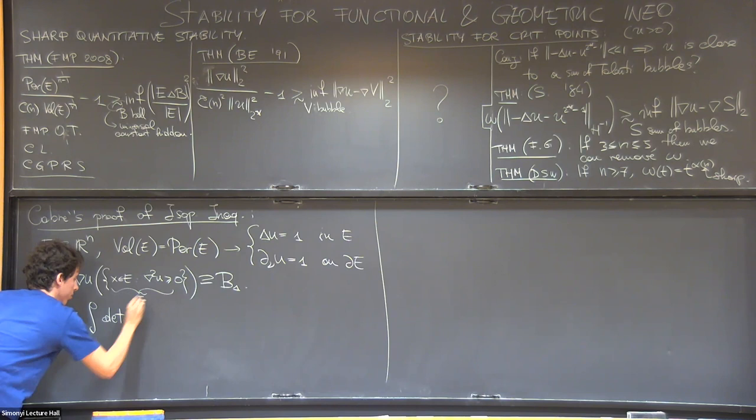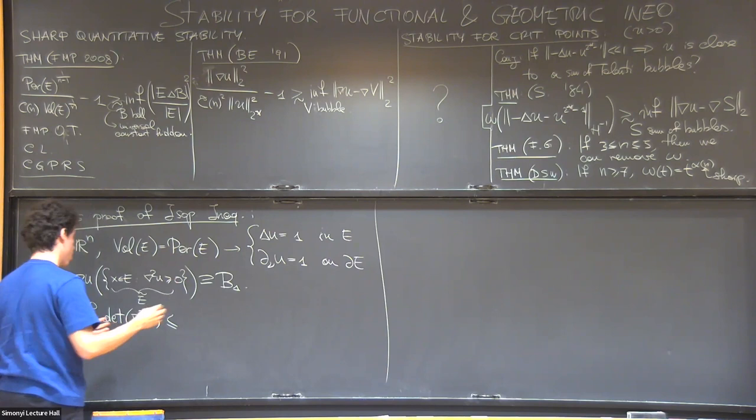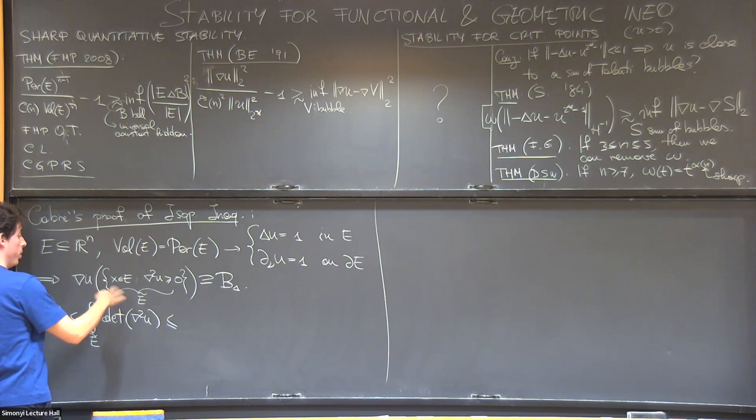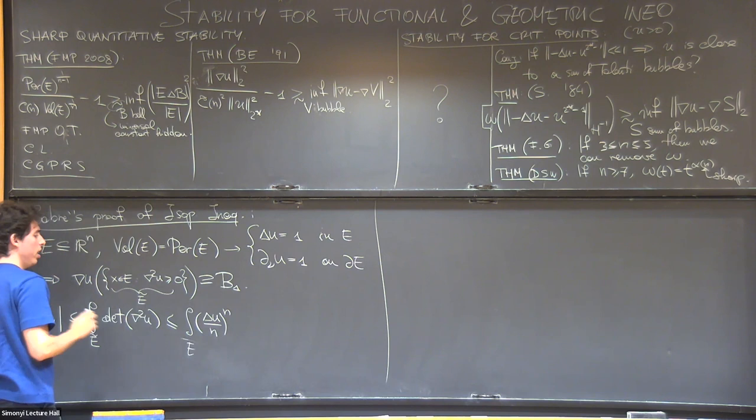Thanks to this, you can do a change of variable. And writing down the Jacobian, you will get that the integral over this set that I call E tilde of the Jacobian must be greater or equal to one. But then, you know, you have a determinant, you have a condition on the Laplacian. It's very natural to estimate this using like the inequality between arithmetic mean and geometric mean. And you get Laplacian divided by n to the power n. Here you just replace E tilde with E. Here you replace Laplacian with one, because you know it, and you end up with this.